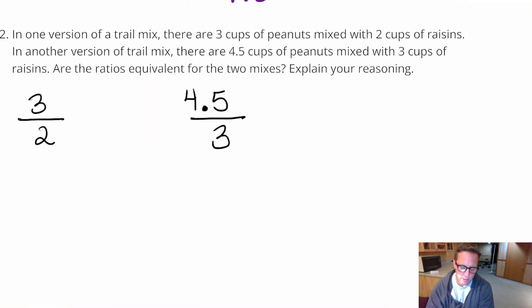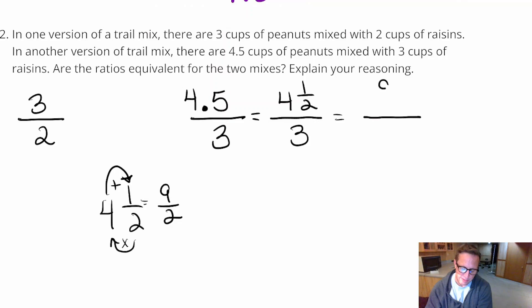Okay, now four and a half. That's a mixed number. So I can think of that as four and a half. Now what I have is I have a complex fraction. Now what I'm going to do is I'm going to change four and a half to an improper fraction. So four times two, two times four is eight. Plus one makes nine. So that's nine halves right there. So we've got nine halves over three.